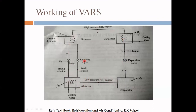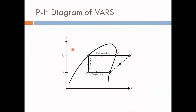Regarding the pressure-enthalpy (pH) diagram: it is similar to that of the Vapor Compression Refrigeration System. The difference is shown by a dotted line representing thermal compression — which replaces mechanical compression. The four devices — absorber, pump, generator, and pressure reducing valve — perform this thermal compression, replacing the mechanical compressor. This dotted line on the pH diagram represents the thermal compression in VARS.